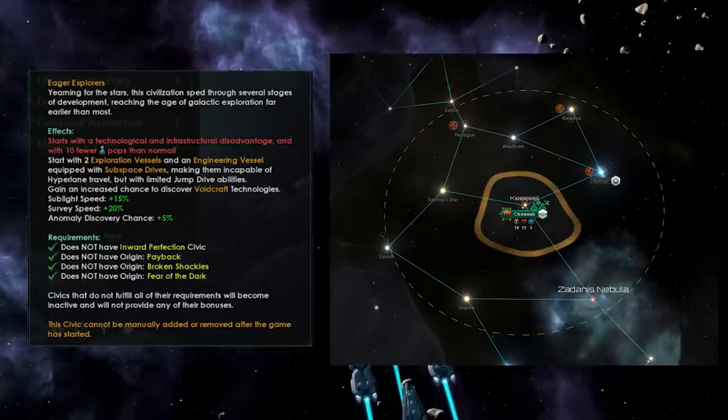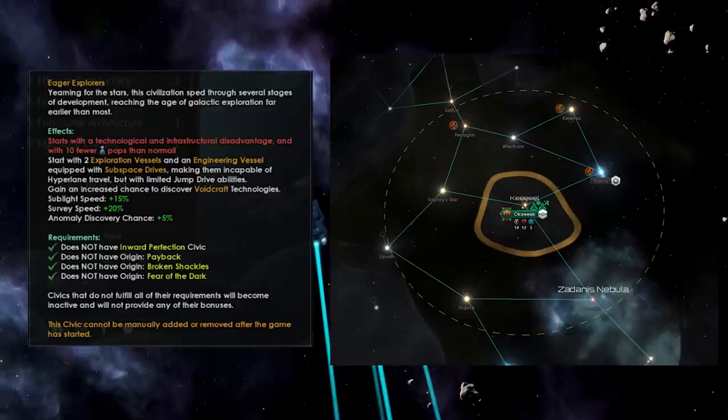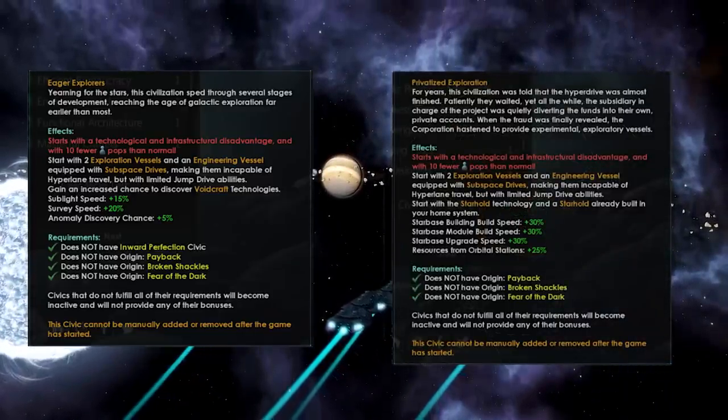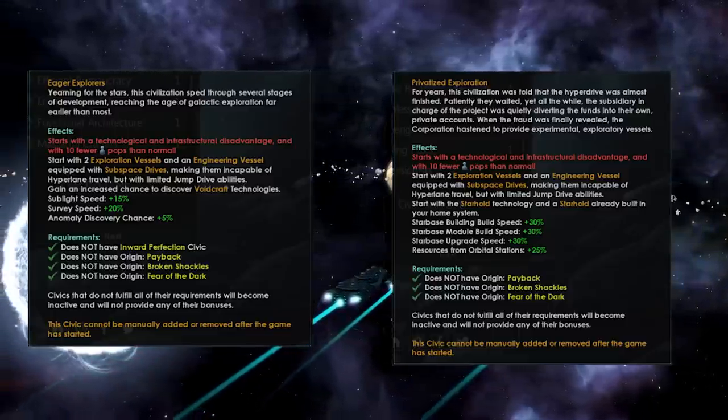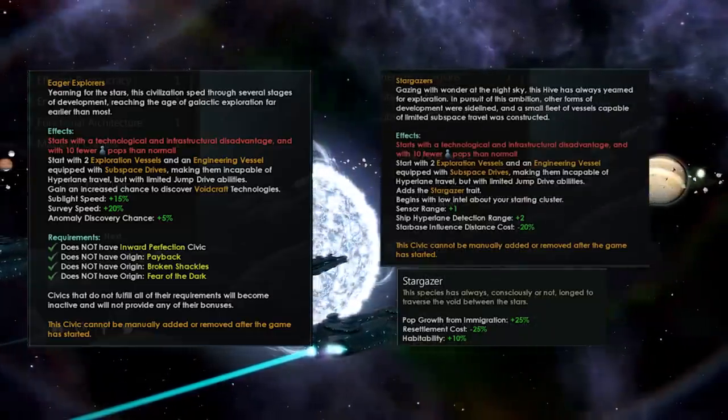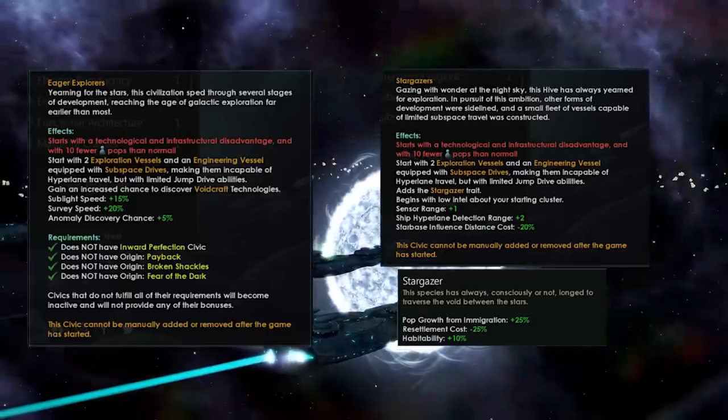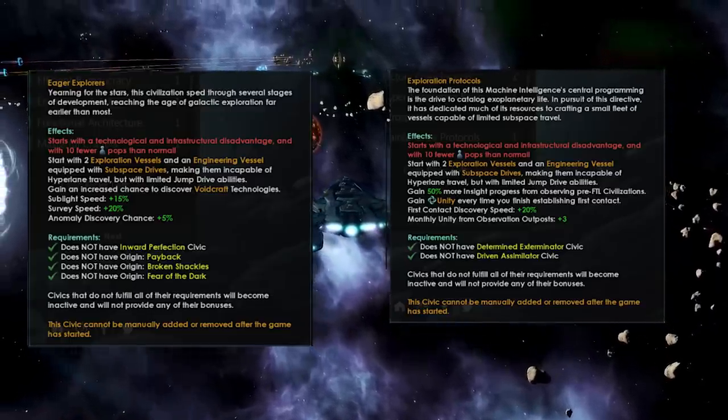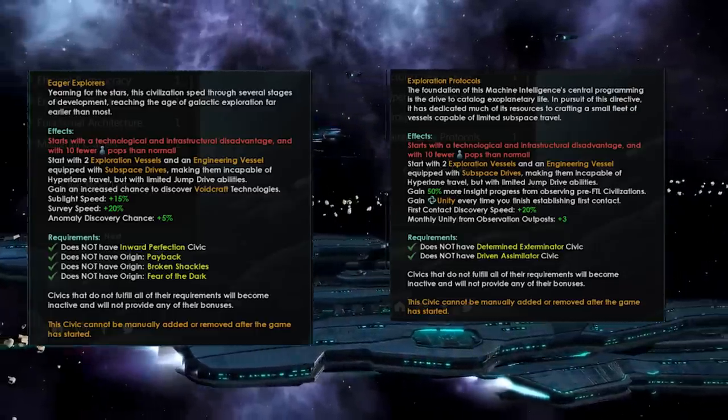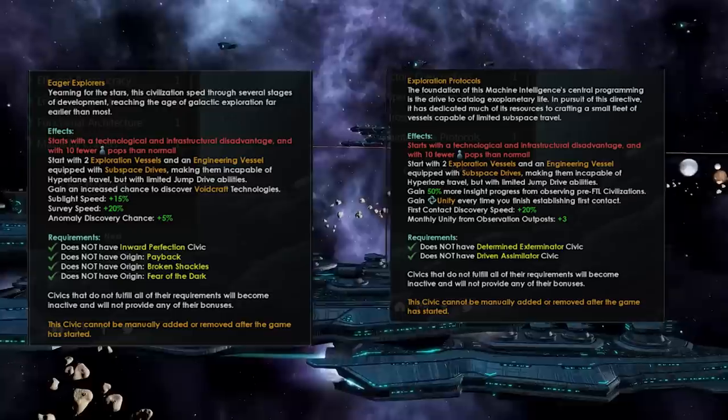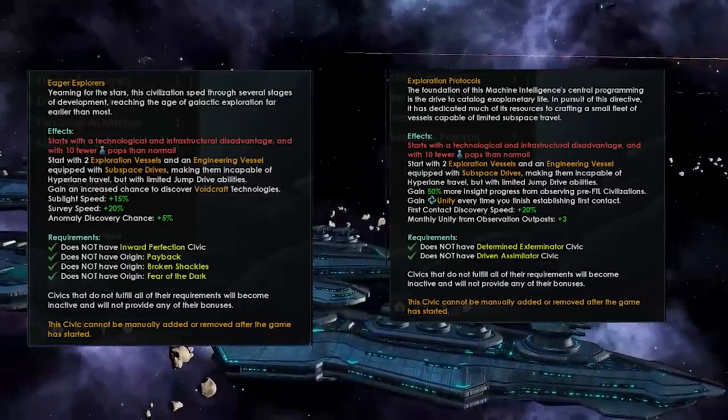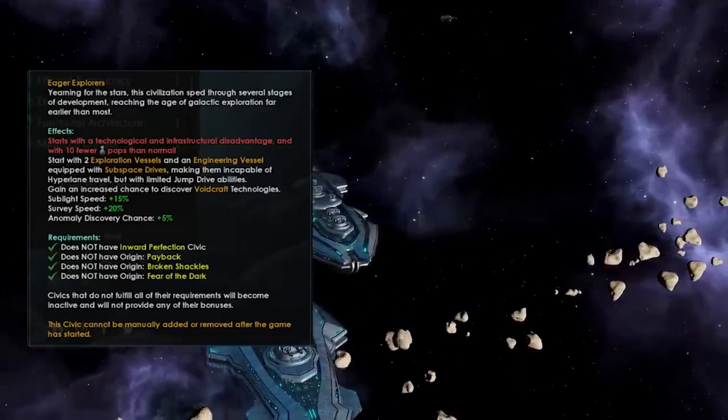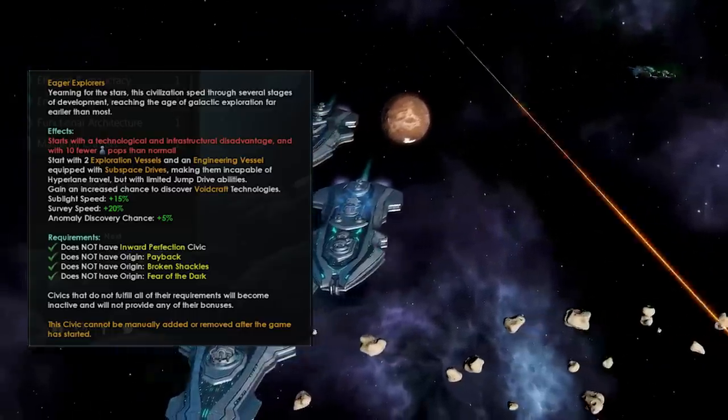There's four variants of this civic: one for regular empires, one for megacorps, one for hives, and one for synths, and each one has a different bonus. Privatized Exploration, the megacorp variant, gives you starhole technology at the start of the game as well as the ability to build starbases a lot faster. Stargazers, the hive mind version, gets a special trait focused on resettlement and growth as well as intelligence bonuses. Exploration Protocols, the machine civic, is focused on making first contact and investigating primitives, getting unity bonuses for doing so. Finally, the regular Eager Explorers will get bonuses to exploration, surveying, as well as discovering anomalies.